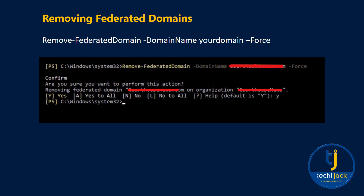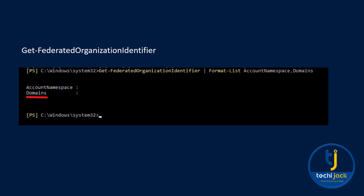The next step is removing the federated domains. Once you confirm the domain name, run the commandlet Remove-FederatedDomain with your domain name and the Force parameter. If you have a sub-domain as well, make sure to remove the primary domain last — remove the sub-domains first. In our case we have only one domain. After running the commandlet, you can verify by running Get-FederatedOrganizationIdentifier again; you will see a blank, confirming that the federated domains are successfully removed.